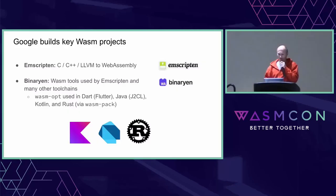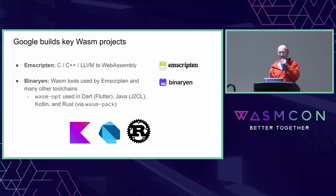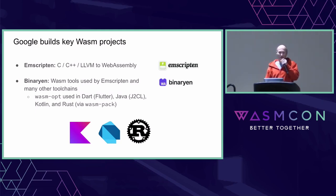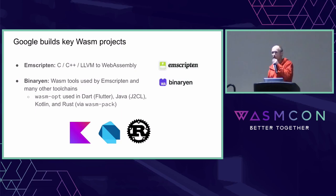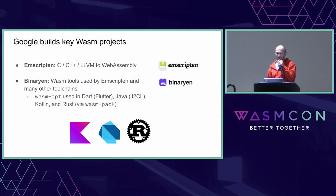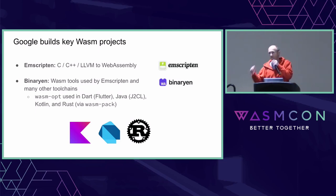Google also builds a lot of Wasm infrastructure. There's Emscripten — probably the most common way to start with WebAssembly, compiling C/C++ via LLVM to WebAssembly. There's also Binaryen, a big project used by many tools in the industry. Binaryen's wasm-opt tool is used by production tools like Dart via J2CL, Kotlin, and Rust with wasm-pack. So there's a lot of infrastructure maintained and built by Google.